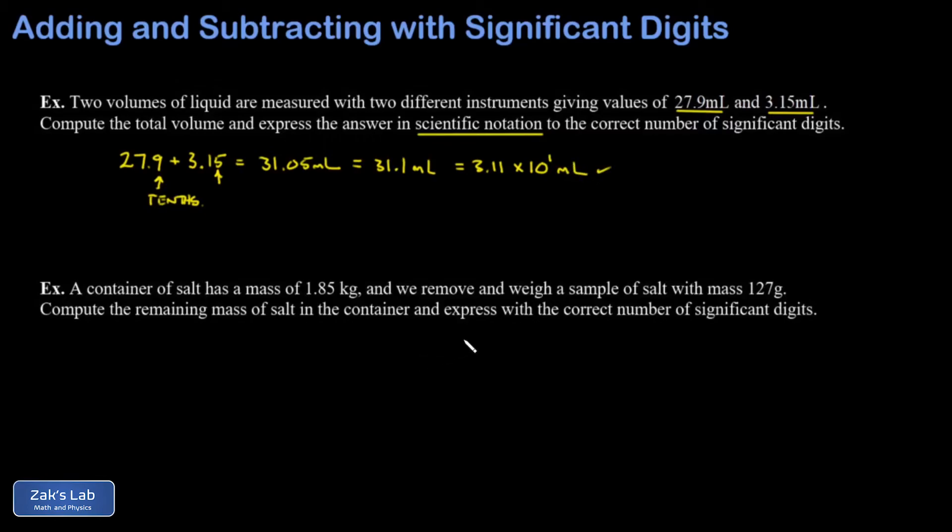In the second example, we're told that a container of salt has a mass of 1.85 kilograms. So you can imagine weighing this on a rather crude scale that handles larger masses. And we remove and weigh a sample of salt with a mass of 127 grams. So that's a more precise scale designed for weighing smaller masses. We want to compute the remaining mass of salt in the container and express our answer with the correct number of significant digits.